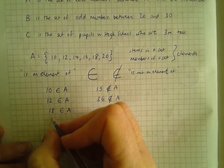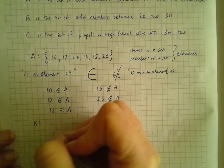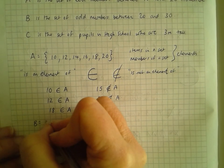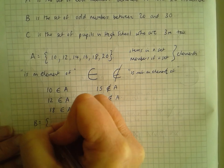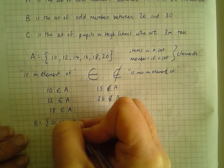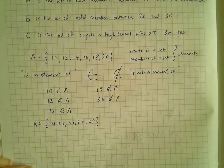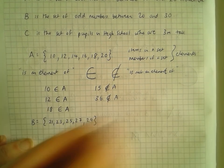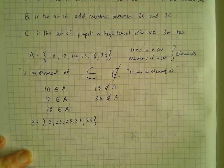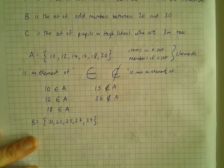Let's list set B — it was the set of odd numbers between 20 and 30, so set B would be 21, 23, 25, 27, 29. Obviously it's a different set to set A; they have different elements. So if a set has different elements, the sets are not equal to each other. We'll talk in a moment about what an equal set looks like.